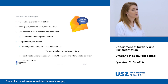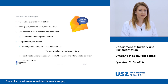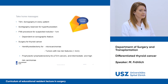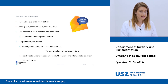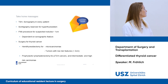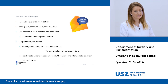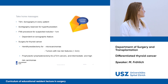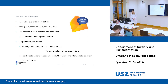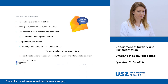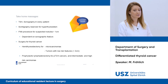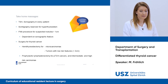Now the take-home messages: TSH and sonography should be performed in every patient for workup of suspected thyroid nodules. Scintigraphy is reserved only for patients with hyperthyroidism. FNA should be performed only in nodules bigger than one centimeter, depending on sonography findings. For surgery: perform a hemithyroidectomy for microcarcinoma and tumors with low-risk features smaller than two centimeters; otherwise do a total thyroidectomy. Prophylactic lymphadenectomy is reserved for patients with pT3 and T4 cancer.